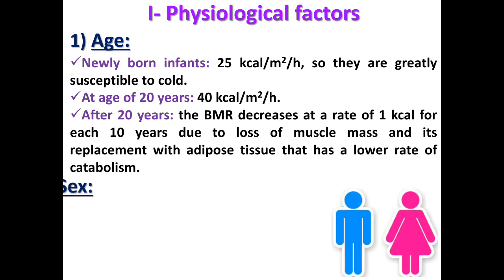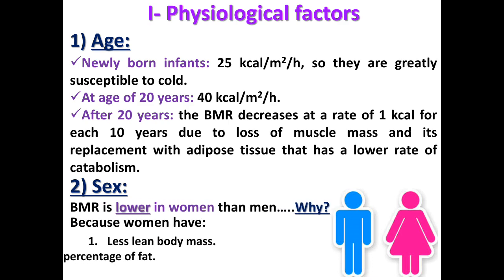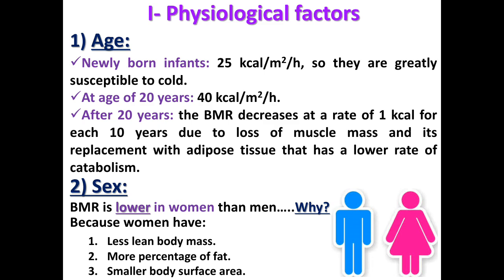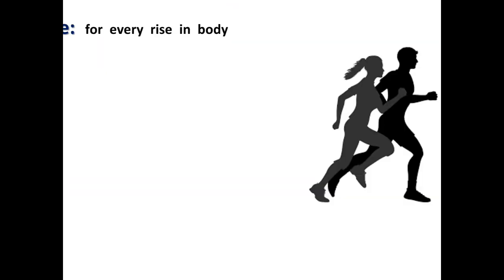Physiological factors affecting BMR: First, age — in a newborn infant it is 25 kilocalories per square meter per hour, so newborns are greatly susceptible to cold. At age 20, it is 40 calories per square meter per hour. After 20 years, BMR decreases at a rate of 1 calorie for each 10 years due to loss of muscle mass and its replacement with adipose tissue, which has a lower rate of catabolism and energy release. BMR is lower in women than men because women have less lean body mass, less muscle mass, more percentage of fat, and a smaller body surface area.